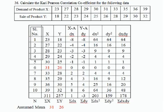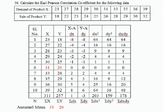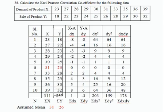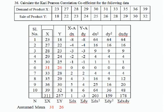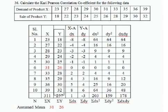Write down the serial numbers 1 to 10. Fill the X column with the demand values: 23, 27, 28, 29, 30, 31, 33, 35, 36. Then fill the Y column with sale values: 18, 22, 23, 24, 25, 26, 28, 29, 30, and 32. The total of the X column is sigma X = 311, and the total of the Y column is sigma Y = 257.